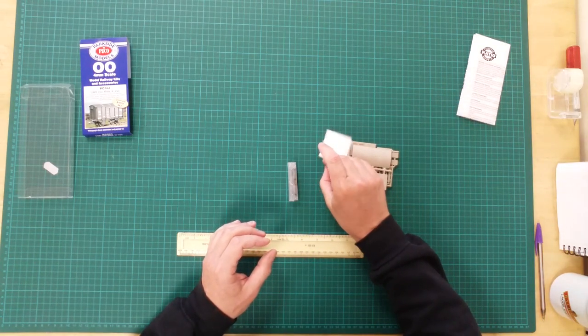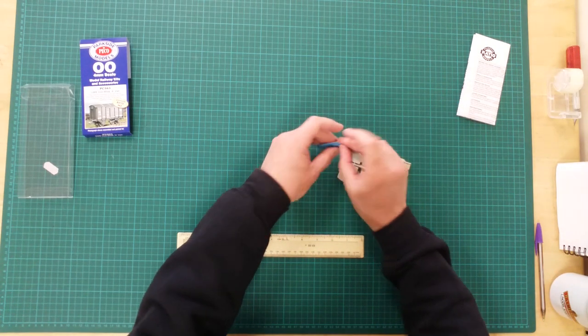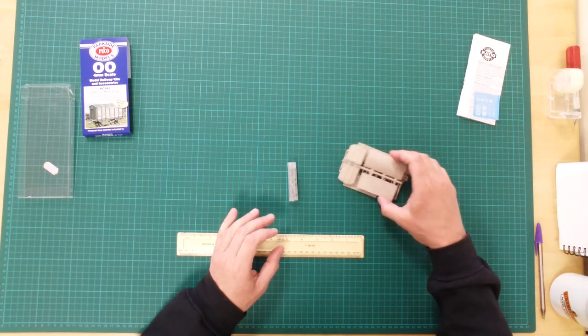In the box, you will find a selection of plastic sprues, a set of wheels and bearings, and assembly instructions.